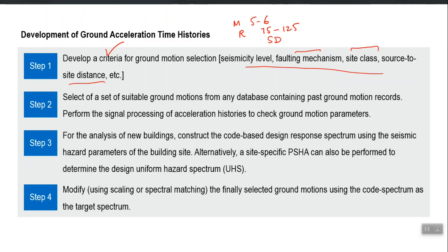This is an important step because we focus on the nature of ground motions so that we can select the most appropriate ones that may occur at our site in future. If we make any mistake in this step, all of our dynamic analysis will be wrong. If the hazard is mainly controlled by short-period, high-frequency earthquakes and we select low-frequency earthquakes instead, the dynamic response will be completely different. Structures are very sensitive to the type and frequency content of ground motion used in dynamic analysis.